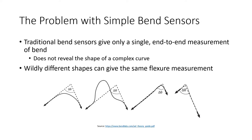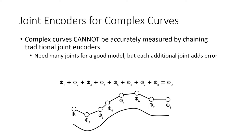The problem with simple bend sensors is they only give you a single measurement of flexure, which doesn't reveal the shape of a complex curve. There are more modern attempts — capacitive versions, for example — but they still give you just one number to describe flexure. In fact, one company's literature shows that many different curve shapes produce the same measurement. That's a significant bug: if a shape is complex, you can't use one of these sensors to tell what's going on.